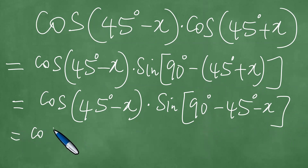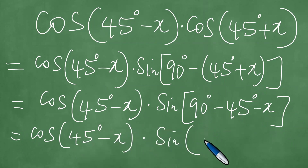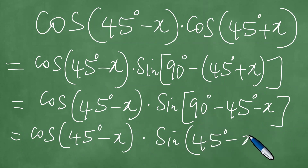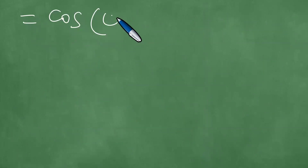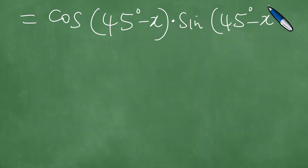So now after having applied the distributive law here, this is cosine of 45 degrees minus x, multiplied by the sine of 90 degrees minus 45 degrees minus x. And so we have therefore that this is the cosine of 45 degrees minus x, multiplied by the sine of 45 degrees minus x.